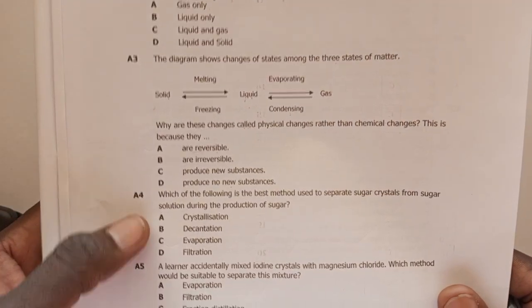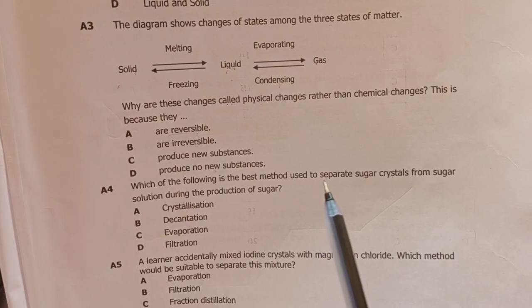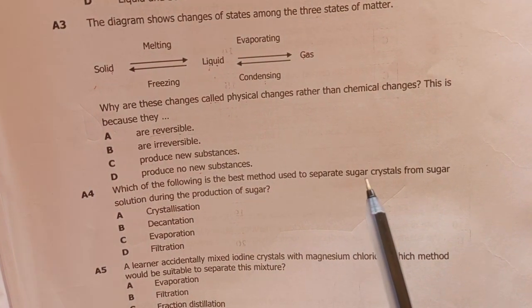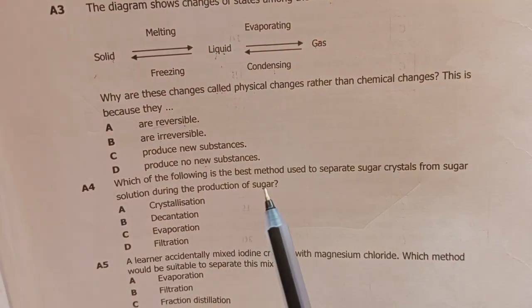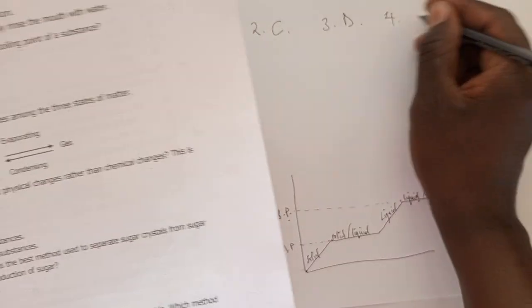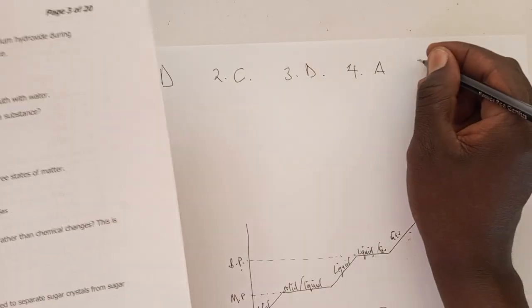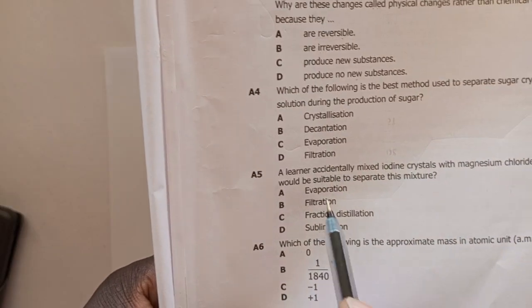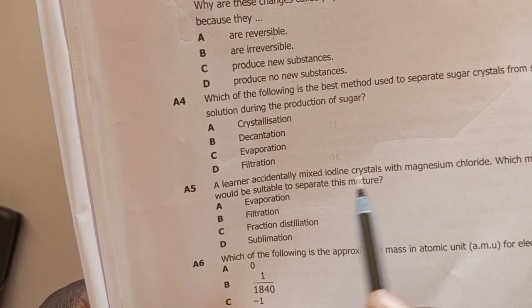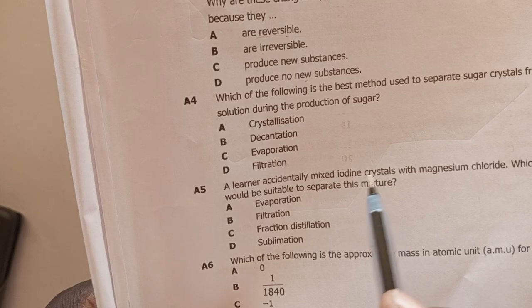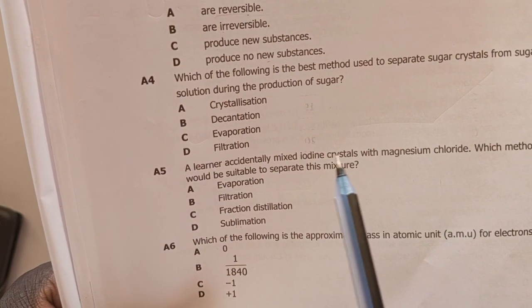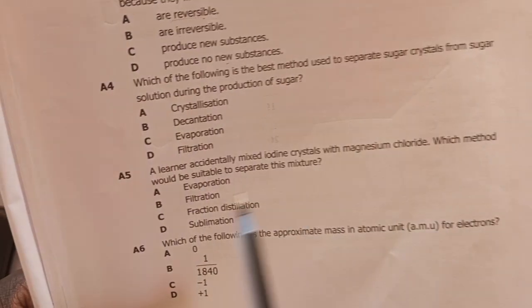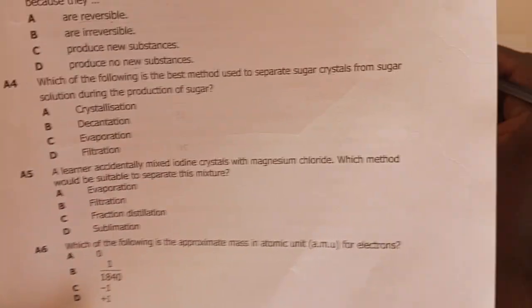Question four asks which is the best method to separate sugar crystals from sugar solution during production of sugar - the answer is crystallization. Question five: Elena accidentally mixed iodine crystals with magnesium chloride. Which method would be suitable to separate this mixture? Because iodine crystals sublime, the answer is sublimation - answer D.